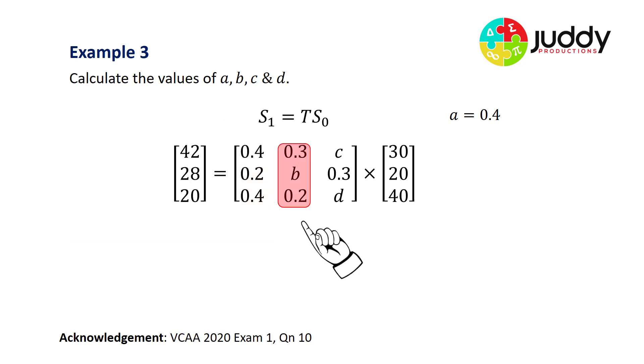Let's consider the second column of our transition matrix. 0.3 plus B plus 0.2 equals one. Now 0.3 and 0.2 add together to give us 0.5, so B must also equal 0.5 to give that column a total of one. We'll slot that value in as well.